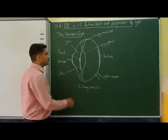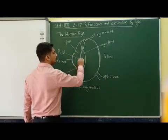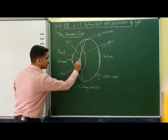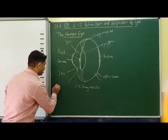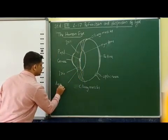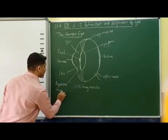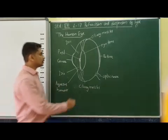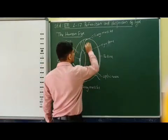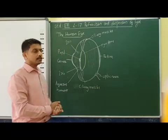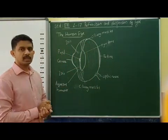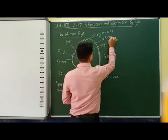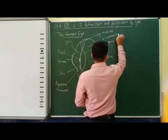Now we can observe that between this area and the eye lens there is a certain type of substance. That type of substance is known as aqueous humor. We can also observe that in between this lens and the retina there is a certain jelly type of substance that is known as the vitreous humor.